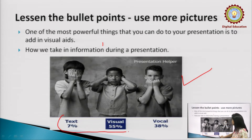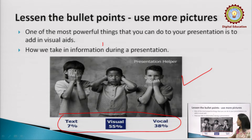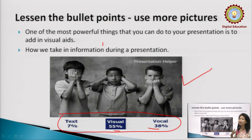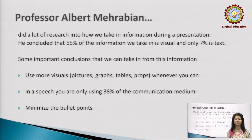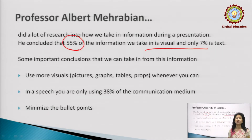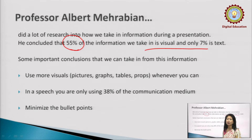It is generally studied that a person will only retain about 7% of text content. Maximum is 55% of the visual — what we see, like pictures and videos — we tend to retain more of that. Only about 38% of what you speak, the vocal part, is retained. Professor Albert Mehrabian did a study and discovered that 55% of the information we take in is visual and only 7% is text. So why don't we make use of this research and put it in our presentations when sharing our views and ideas.